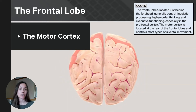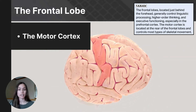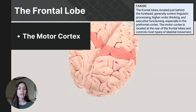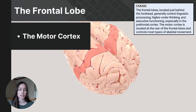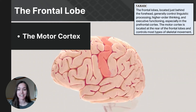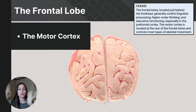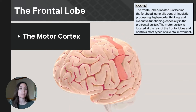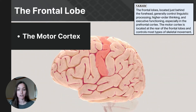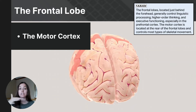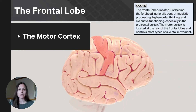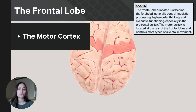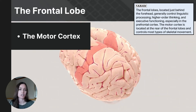The second specialized area is the motor cortex, located at the back of the frontal lobe. It stretches across the top of the head, spanning both hemispheres from ear to ear, and controls voluntary movements. The motor cortex is organized somatotopically, meaning different locations correspond to different parts of the body, creating a motor map. In 1870, German physicians discovered that mild electrical stimulation to different parts of an animal's motor cortex made different body parts move, and stimulation of one hemisphere caused movement on the opposite side of the body.